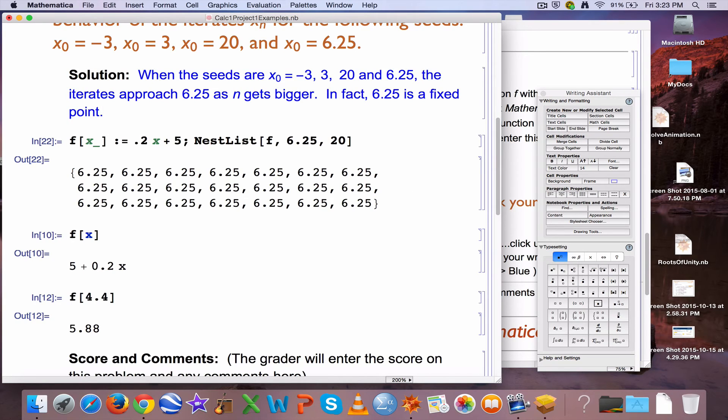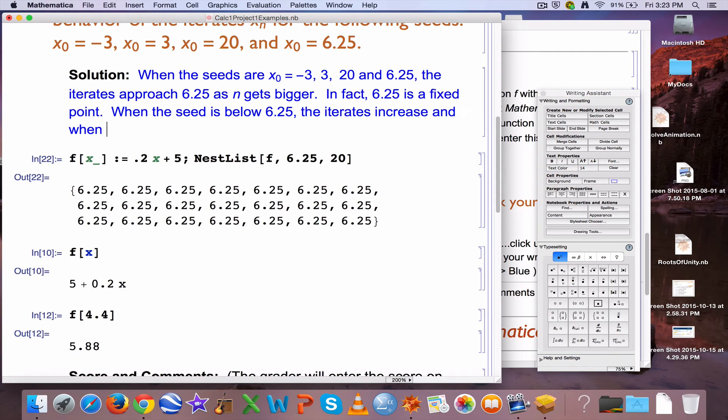You could also add, when the seed is below 6.25, you should also add this, I think, the iterates increase, and when the seed is above 6.25, the iterates decrease. Okay?